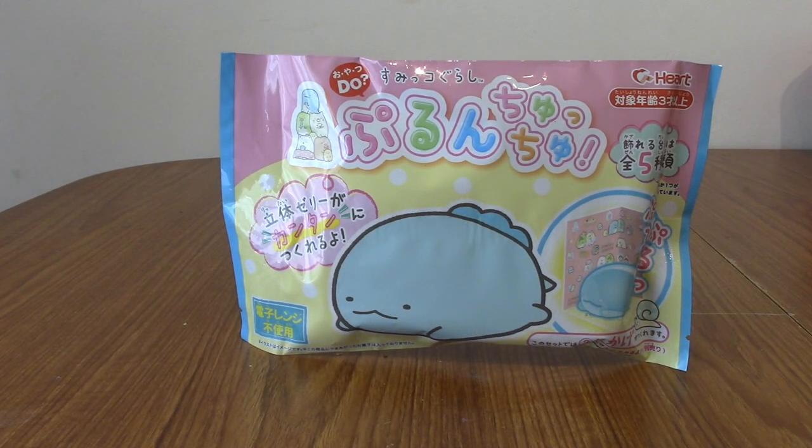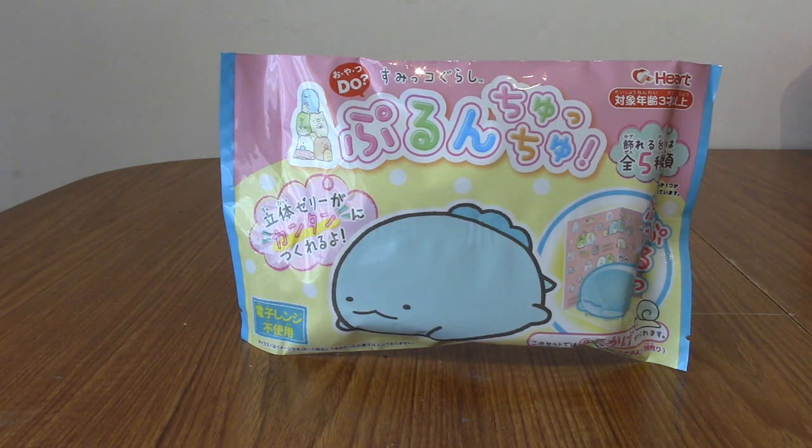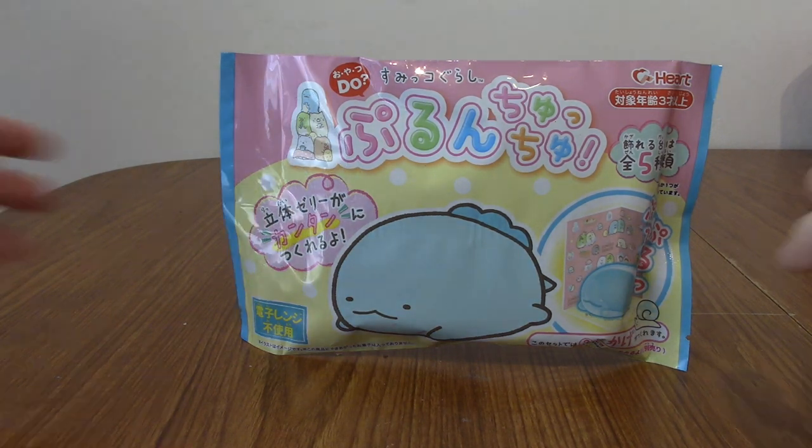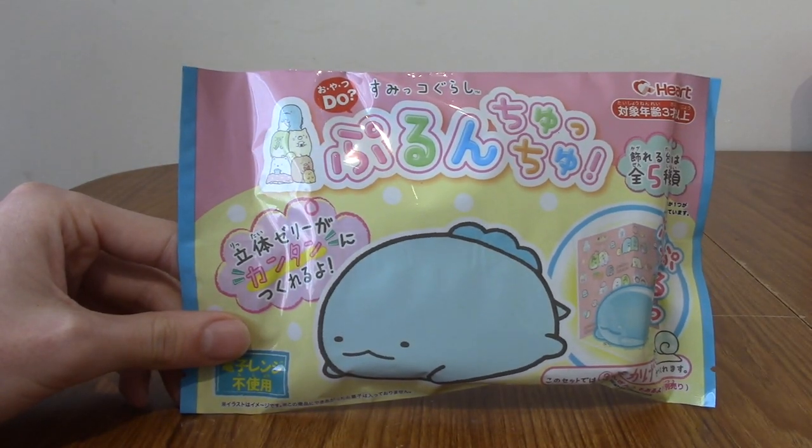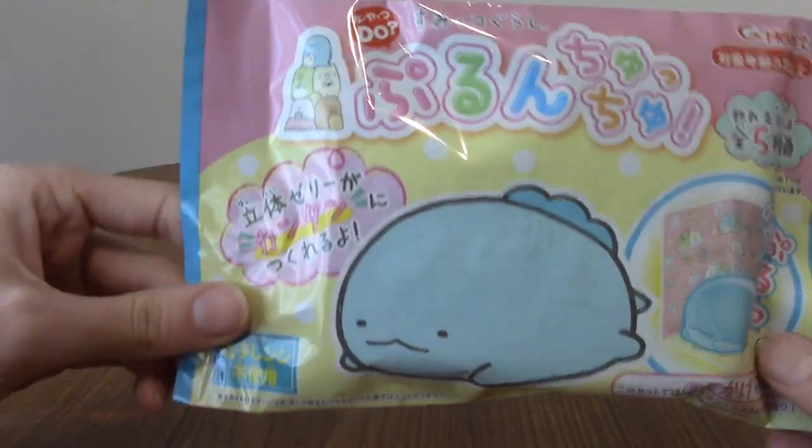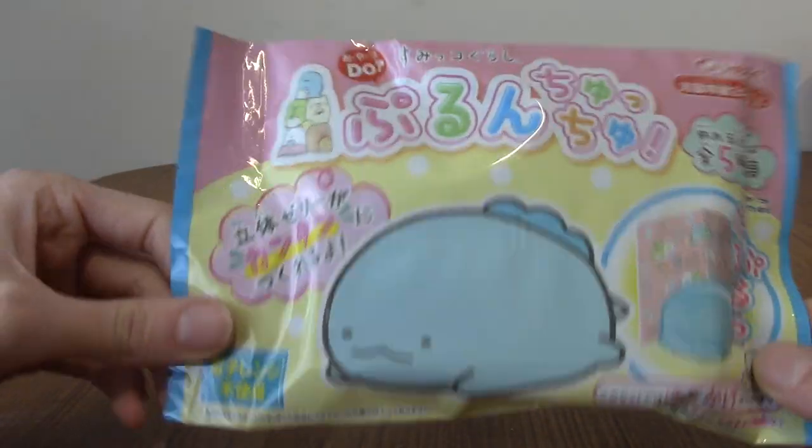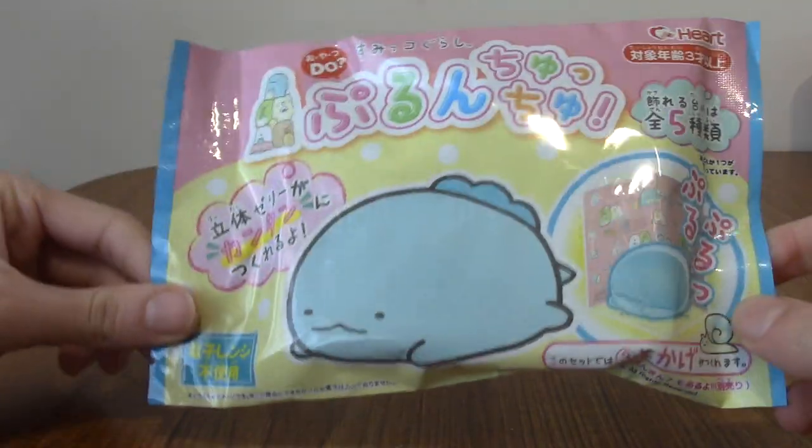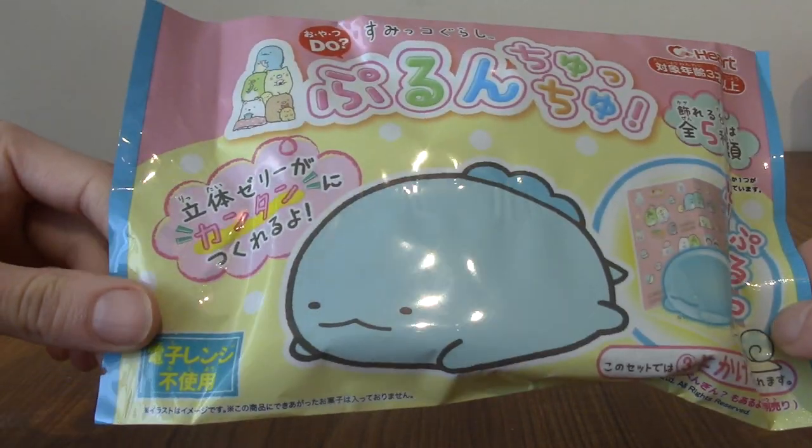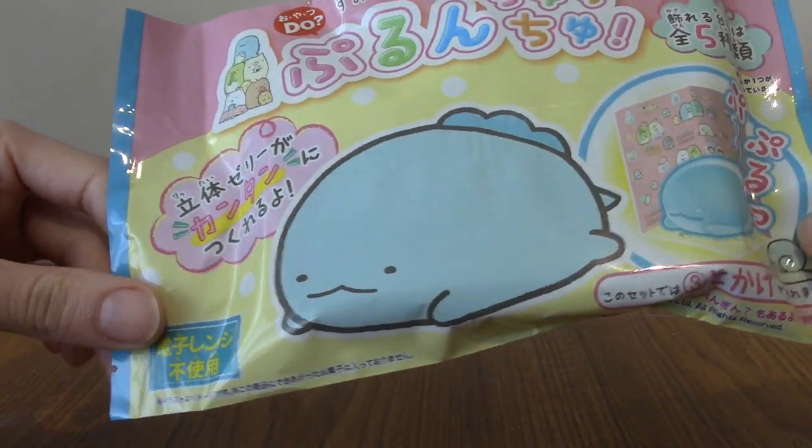All right. It is time for the Sumiko Garashi Purun Choo Choo DIY kit. What a mouthful. So this, if you remember, came from, I can't remember which box it was, but I think it's the new year one. This lets you make a jelly friend. And there's one of four varieties and I happen to get the cutest one I think, who looks a bit like Quagsire from Pokemon.